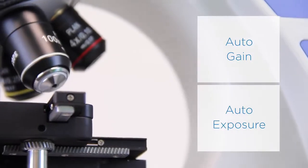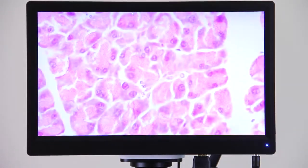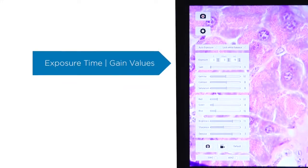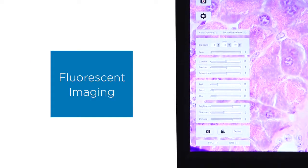With the auto-gain and exposure features, white balance, color correction, and optimal exposure occur automatically every time you change magnification. The exposure time and gain values are highly adjustable too, making it optimal for fluorescent imaging.